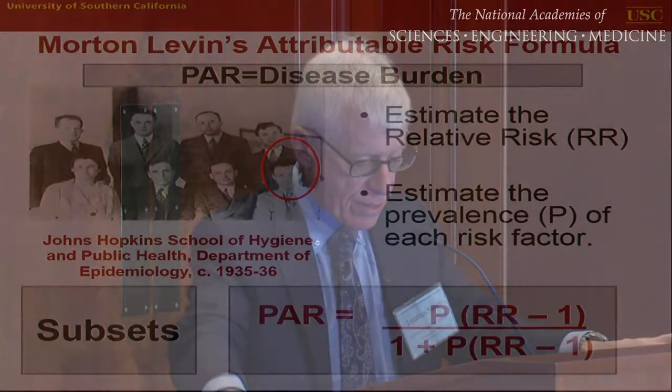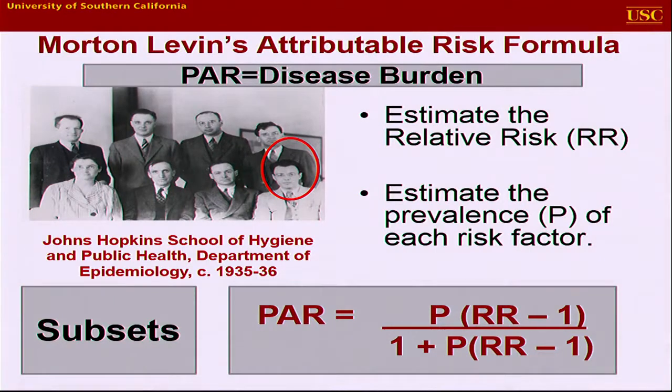This next step of quantification harkens back to a 1953 paper by Levin, who published what we now call the population attributable risk. He wrote a paper in 1953 that should be read by those interested in risk assessment. He had done one of the 1950 case-control studies on lung cancer. And in 1953, he wrote, 'I think that smoking causes lung cancer. And if we think something causes a disease, then the next thing we want to know is how much disease does it cause.' Very logical.